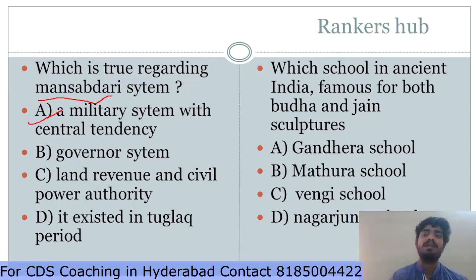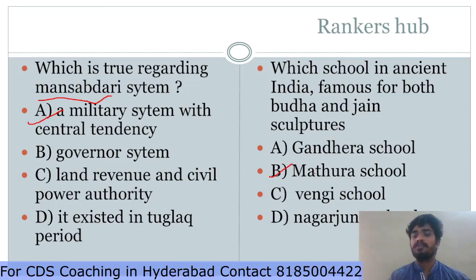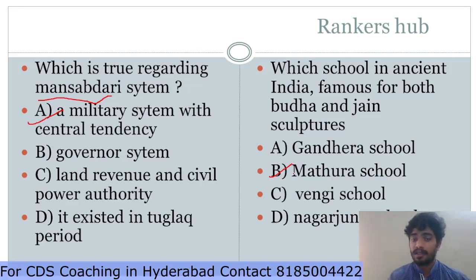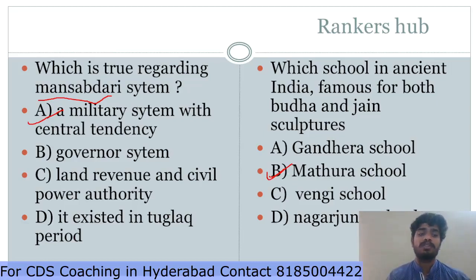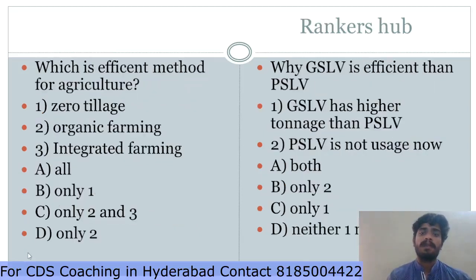Which school in ancient India was famous for both Buddhism and Jainism sculpture? The answer is Mathura. There are two schools famous for Buddhism and Jainism sculpture. Options Vengi and Nagarjuna can be ruled out easily. The answer is B — the Mathura school of art. Moreover, the Mathura school of art was the first school that designed the Buddha image.